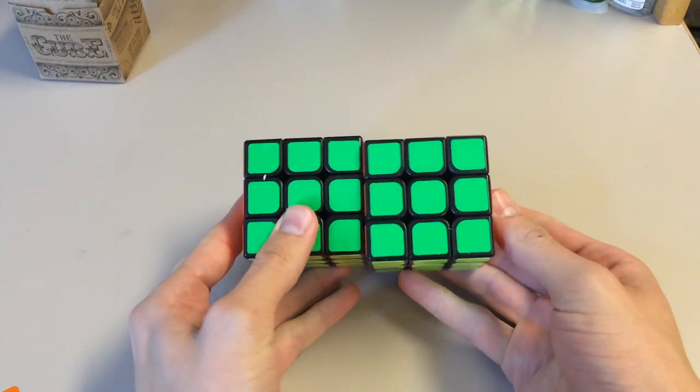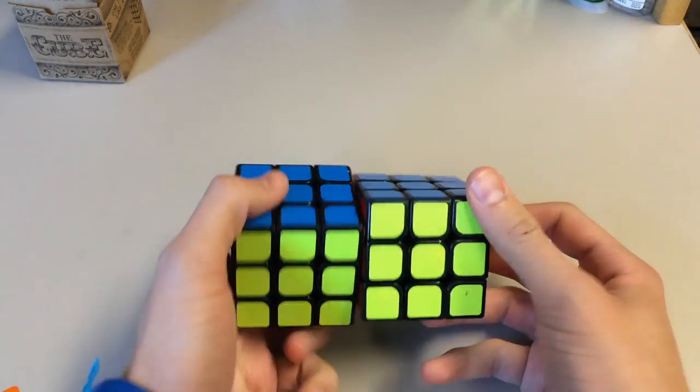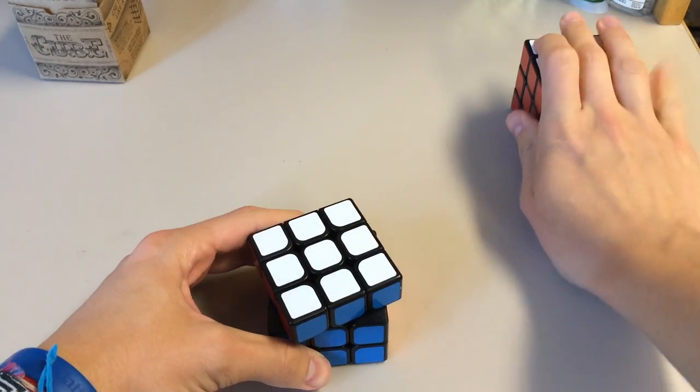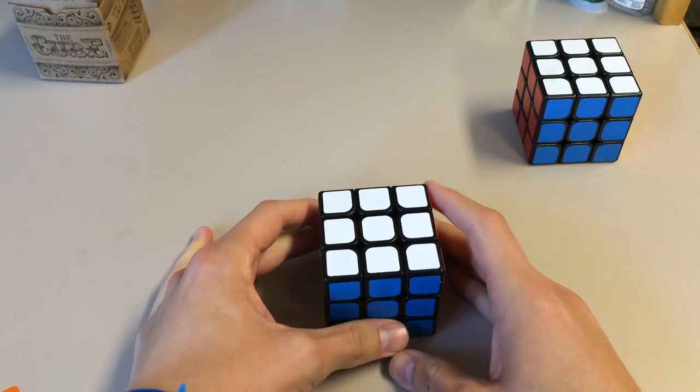Stickers are the exact same size, shade, and everything. That's the guanlong. This is the cube. Let's go ahead and do first turns on the cube.